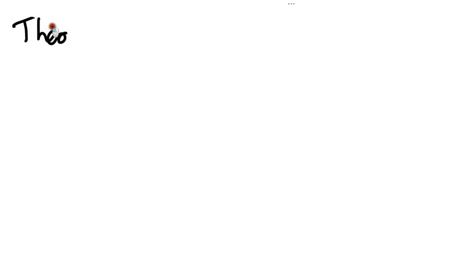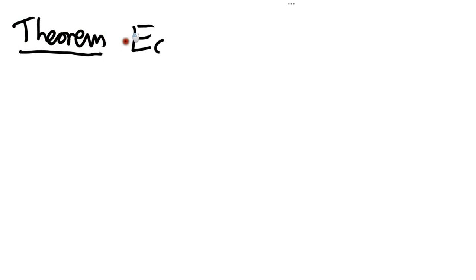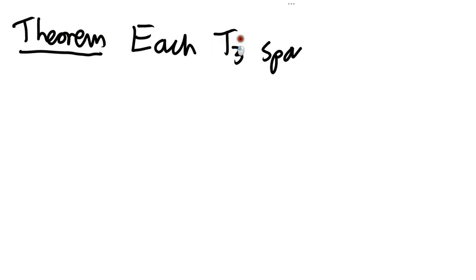Our next result — which you might be able to guess — is that each T3 space is T2. What's the proof? Suppose we have a pair of distinct points a and b in our space.